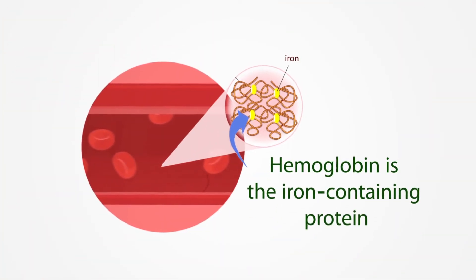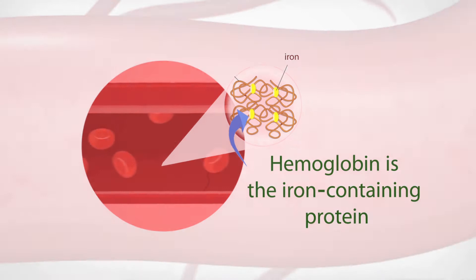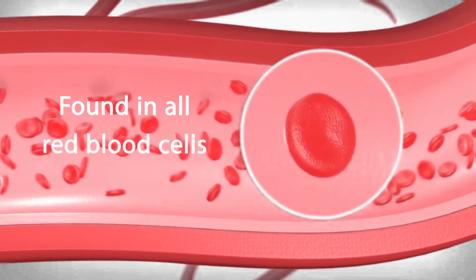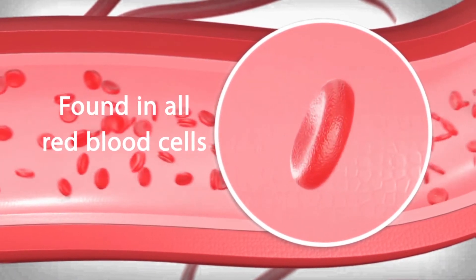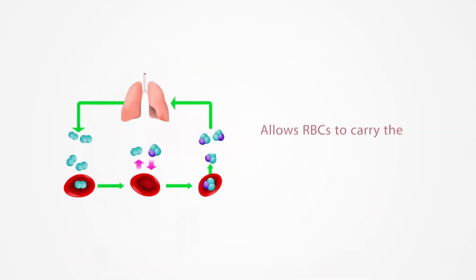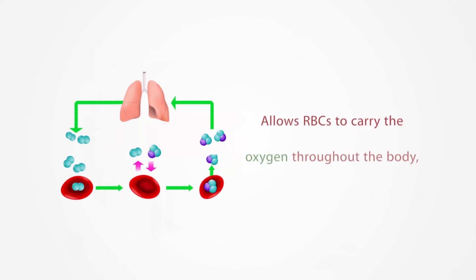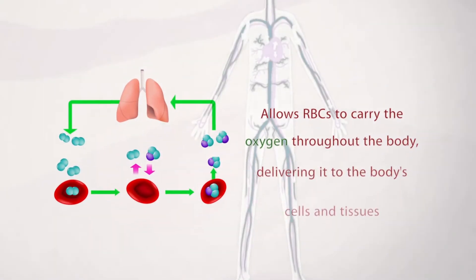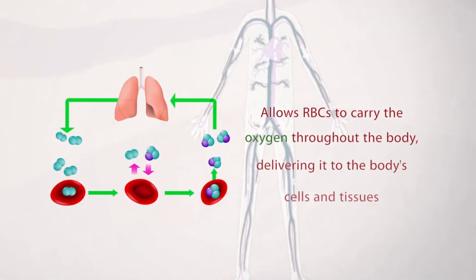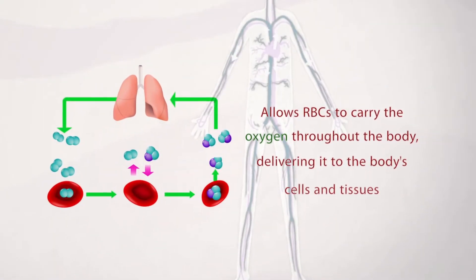Hemoglobin is the iron-containing protein found in all red blood cells that binds to oxygen in the lungs and allows RBCs to carry the oxygen throughout the body, delivering it to the body's cells and tissues.